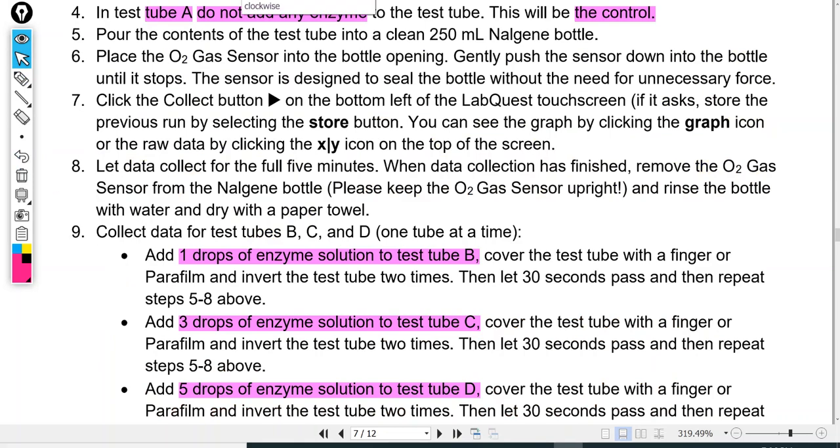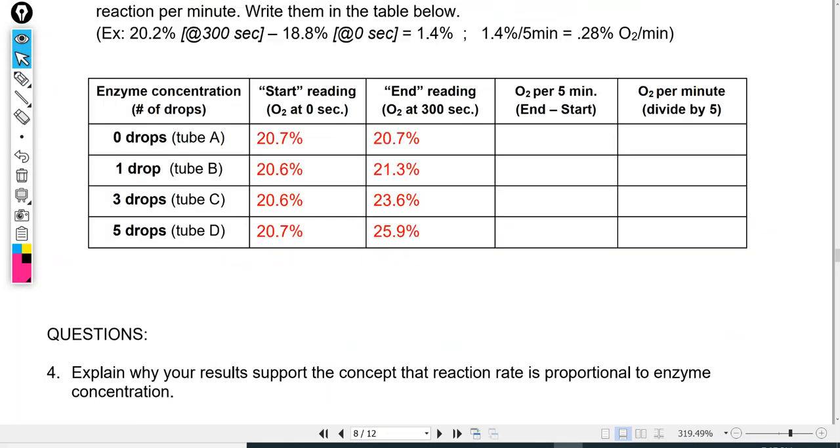So here are your variable conditions. You have a test tube with zero drops of enzyme, you have a test tube with one drop, a test tube with three drops, and a test tube with five drops with the same concentration of substrate in each one. Again, fill out the table and answer some questions that follow.